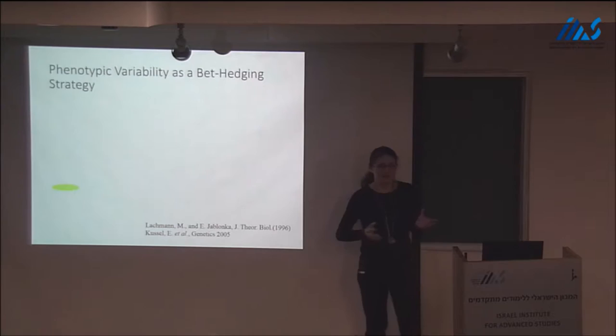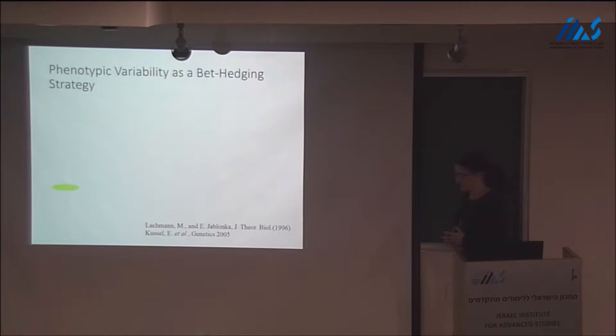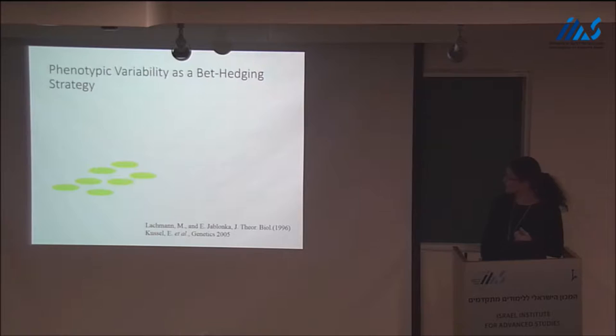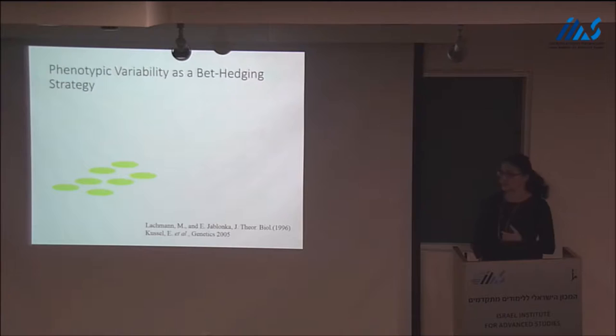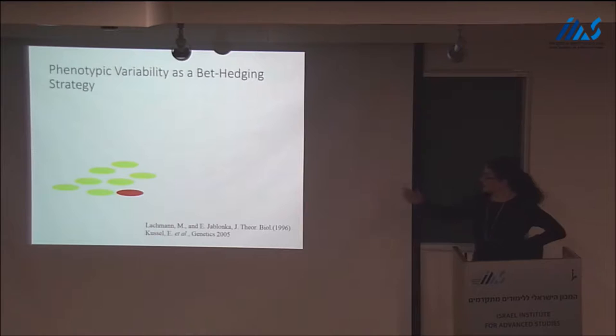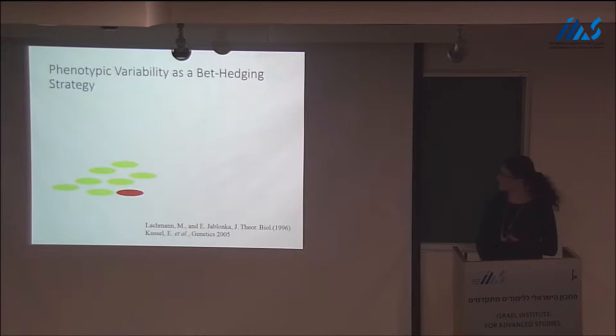This kind of strategy — being phenotypically variable — has been modeled as a bet-hedging strategy. The idea is to understand it as an evolutionary strategy of diversification. If you have a uniform population of very fast-growing bacteria and a stress — antibiotics is one of them, but not only — then the population may be wiped out. But if you have phenotypic variability, you will have these rare cells that are not growing. They have a fitness cost because they don't grow when there is plenty of food, but in the event of a bad condition, they are the ones that survive, and eventually recreate the whole population.